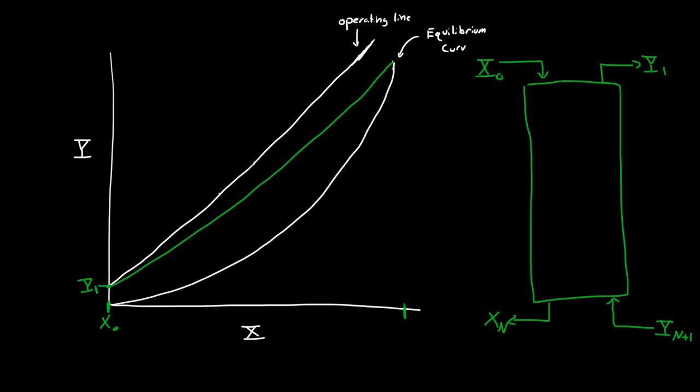But it's really important to note that this operating line should never cross the equilibrium line. And that will become hopefully clear in the next few minutes when I actually start showing you how the stages are made. So we know what Y_1 is, and we know what X_0 is. We assumed X_0 was clean, so it will be right here.